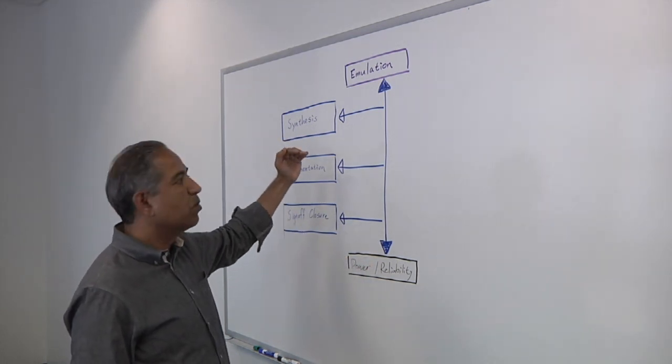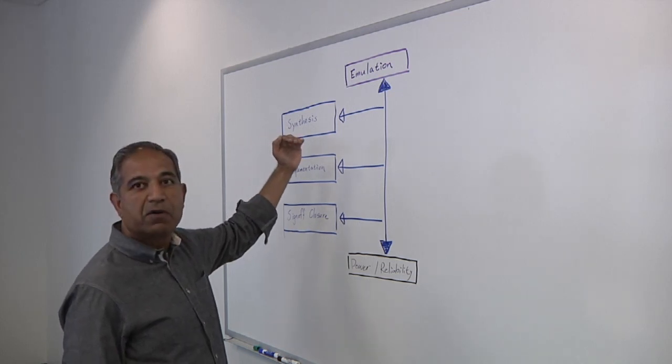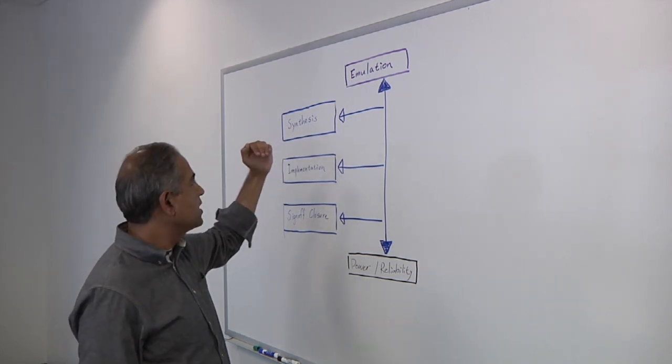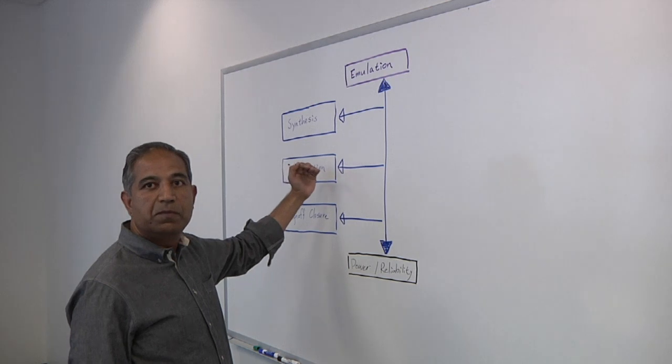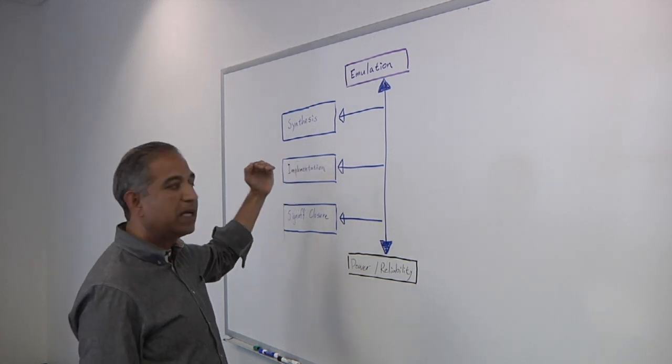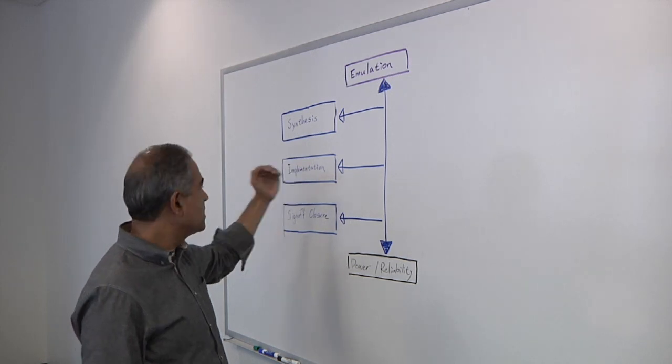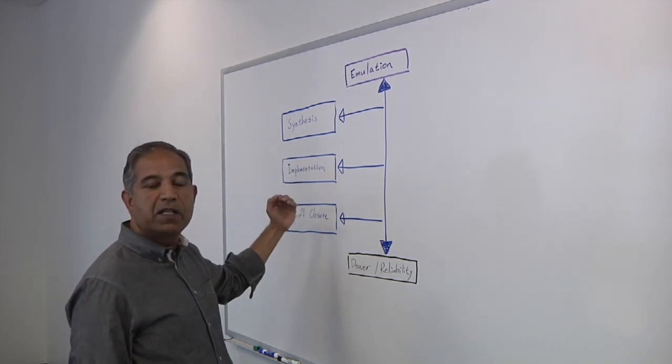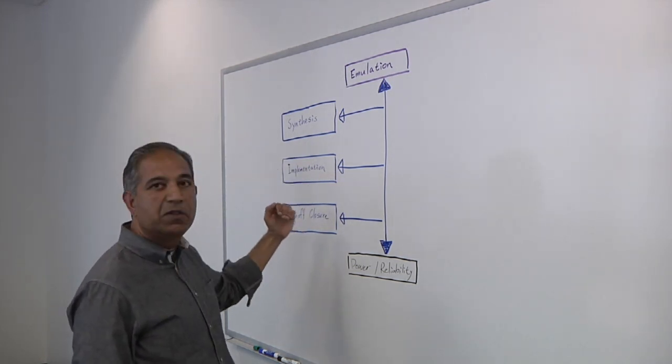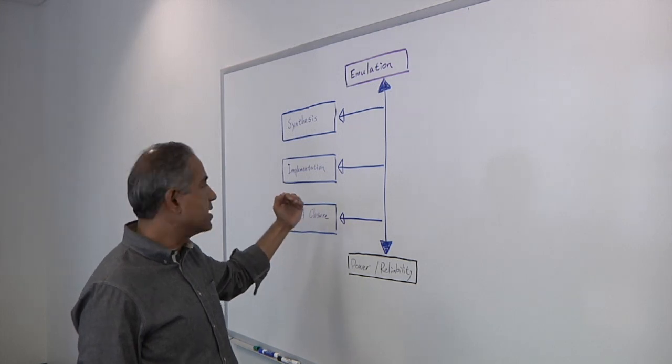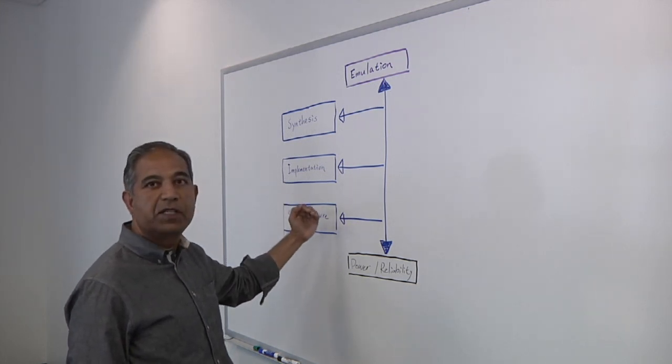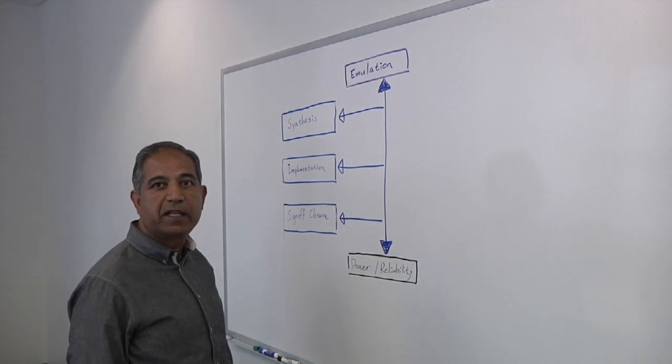Starting right at synthesis, you want to make sure that you have the best power and reliability metrics. Then as you go through detailed place and route, the same information should be used to decide whether you've met your design goals. And then finally, when you get to the end of your design cycle where you're trying to do ECOs and design closure, you want the same information to guide that design phase.